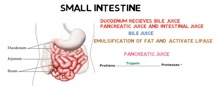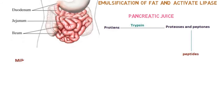The liver secretes bile juice with two bile pigments called bilirubin and biliverdin. The liver does not contain any enzyme, but it has bile juice so it plays a vital role in digestion. Bile juice helps in emulsification of fats and activates lipases.